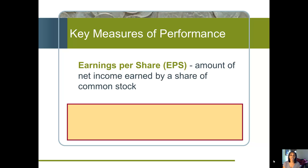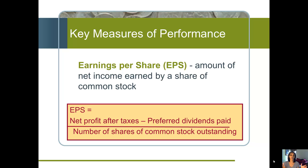Next we have earnings per share, sometimes abbreviated EPS. That's the amount of net income earned by one share of common stock. It allows us to take a really big number and put it in perspective. EPS is net profit minus dividends divided by the total number of shares outstanding.